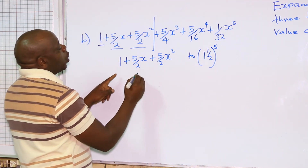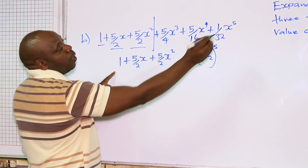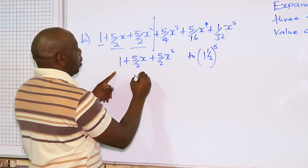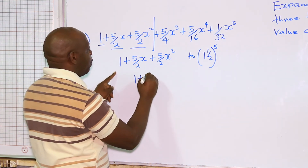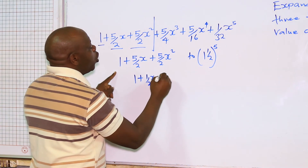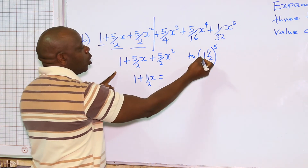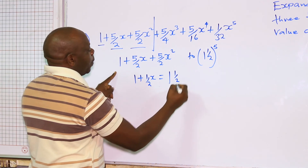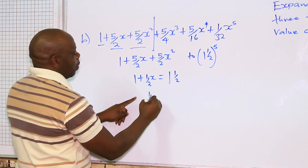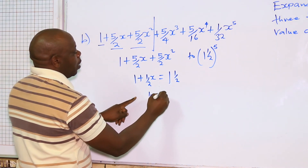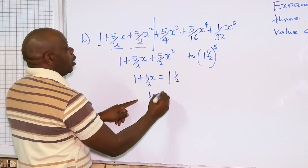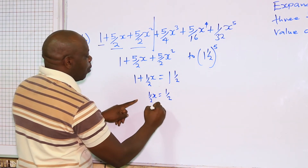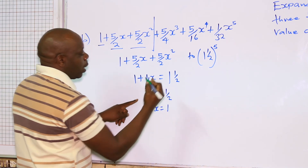To estimate 1½ to the power 5, you take the original expression 1 + ½x and equate it to 1½. So ½x = 1½ − 1 = ½, and therefore x = 1.